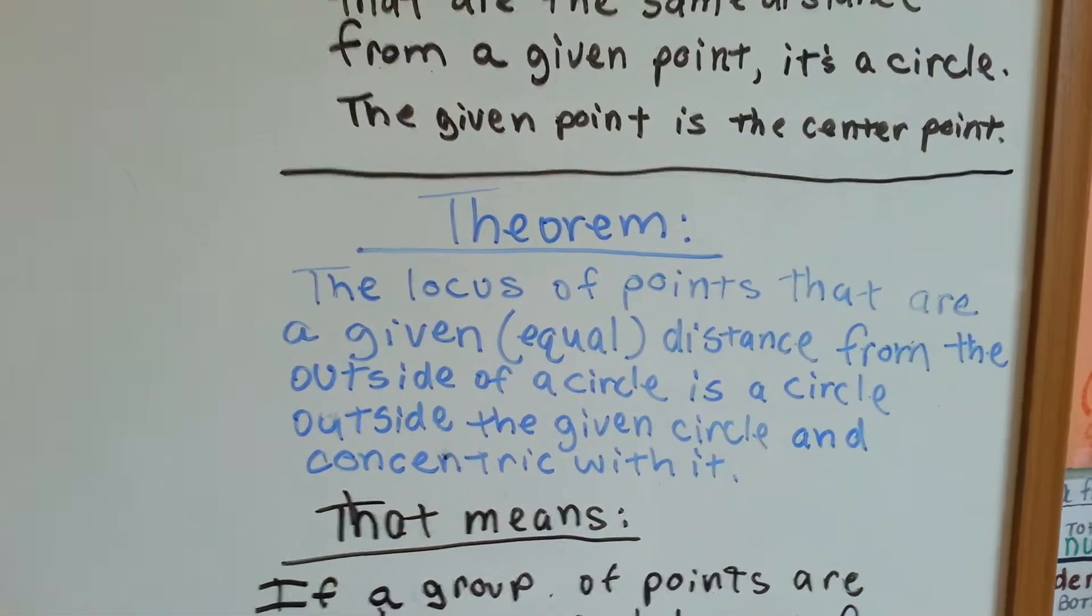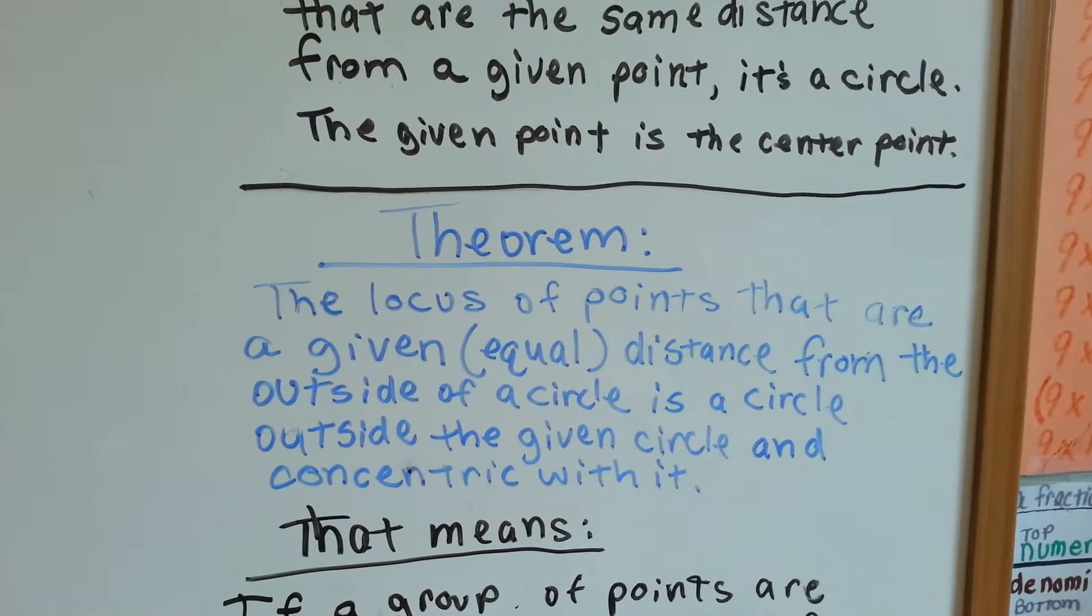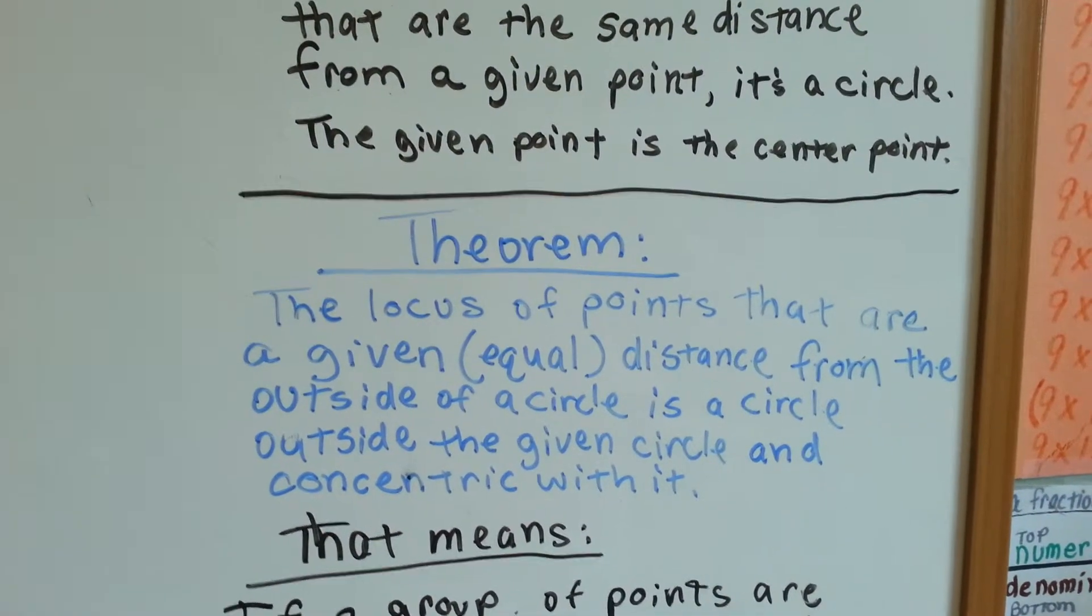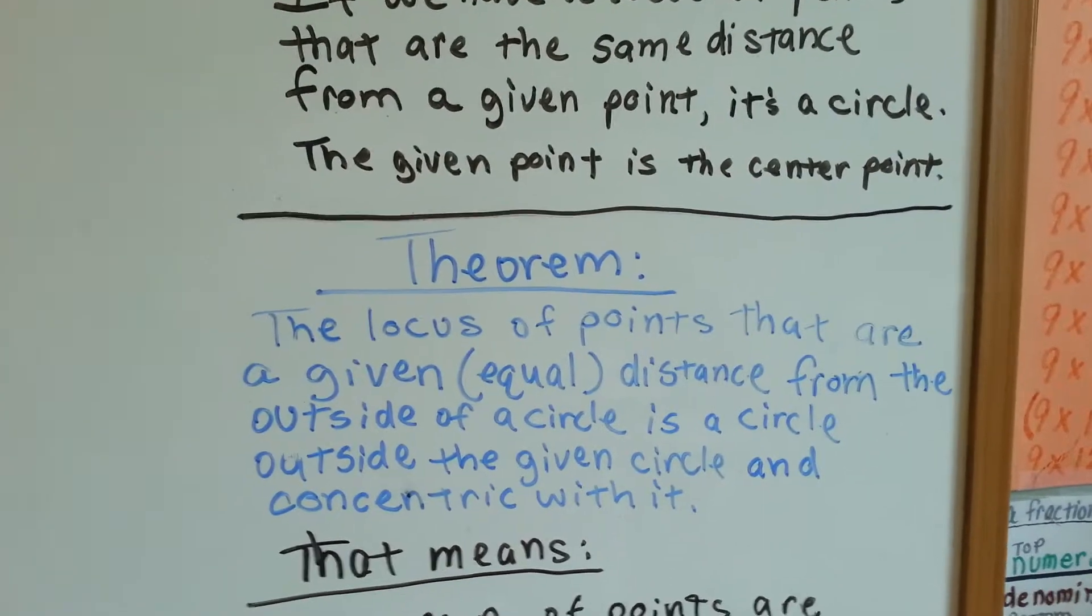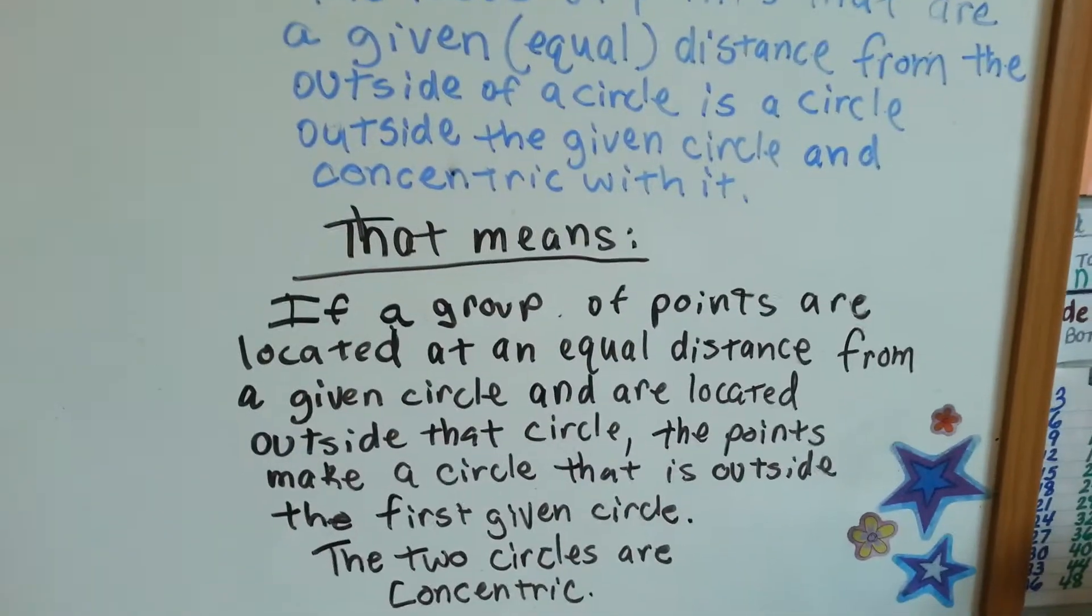Theorem. The locus of points that are a given equal distance from the outside of a circle is a circle outside the given circle and concentric with it. Okay. Here we go. That means,